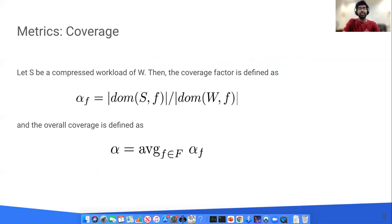Let us formally define the metrics next. The first metric we define is that of coverage. So suppose s is a summarized workload that is a subset of the input workload w. Then for each feature f, we define the coverage as the fraction of feature values present in the input that are also present in the summary. Coverage is a value that lies between 0 and 1 and ideally we want it to be as large as possible. The overall coverage is defined as the average of the coverage value over all features under configuration.